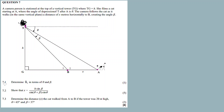Now we have question 7.1 — determine angle B1 in terms of alpha and beta. The angle B1 is equal to beta plus theta.